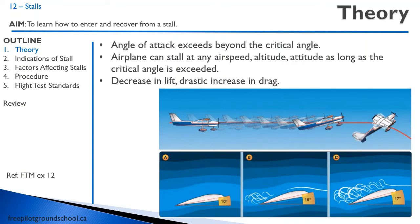any altitude or any attitude, as long as the critical angle is exceeded. When you're practicing stalls, most of the ones you practice will be in nose-high attitudes, but you can also stall an aircraft in a nose-low attitude, even though it's less likely. During a stall, there is a separation in the boundary layer — the air starts actually moving forward on the wing in the boundary layer. What you need to know is that there's a decrease in lift and a drastic increase in drag at the stall, and the air becomes turbulent over the wing.